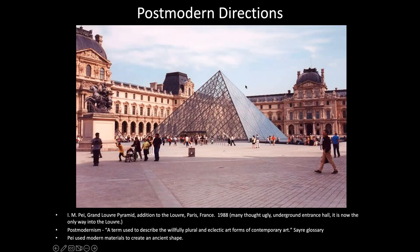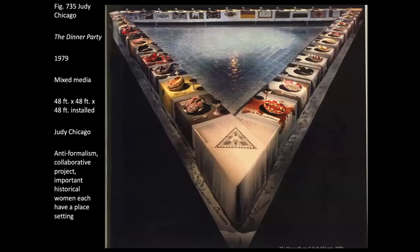Post-modernism can be defined as a term used to describe the willfully plural and eclectic art forms of contemporary art. We'll get more into those themes — that's just one way of thinking about post-modernism, not necessarily the only way.